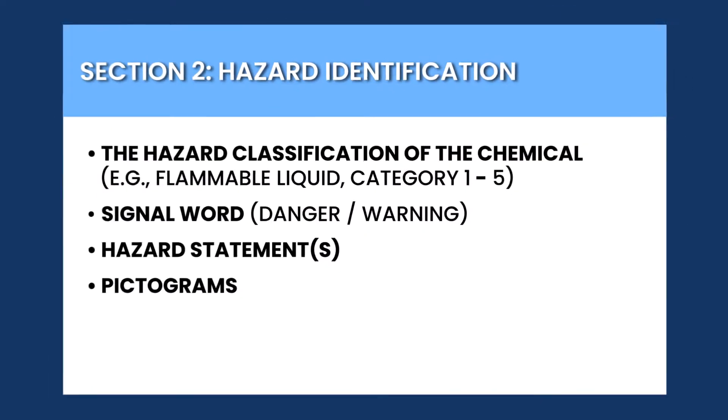Section 2 of the SDS is called Hazard Identification. It's one of the most important sections because it helps you understand the potential hazards associated with the chemical and how to handle it safely. This section includes any hazard classifications, which tell you if the product is flammable, toxic, corrosive, or otherwise.